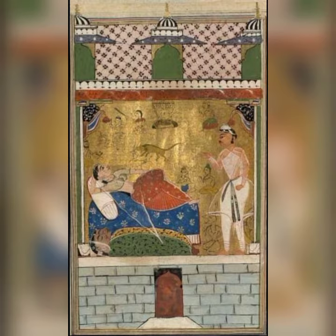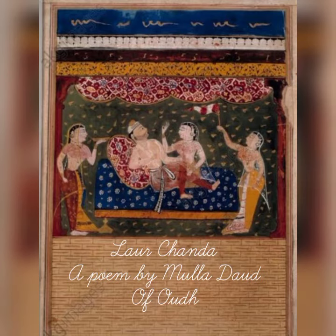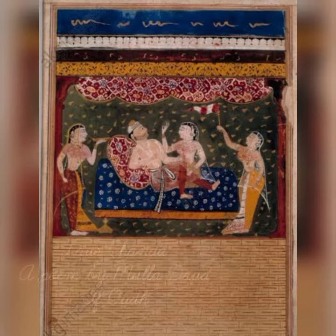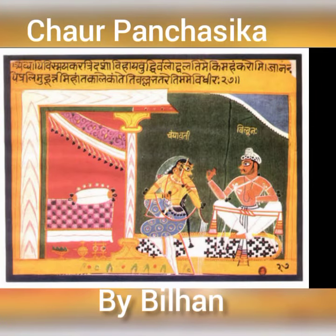Paintings became more secular and romantic themes were introduced. Laur Chanda, a poem composed by Mulla Daud of Odh, and Chaurapanchasika in Sanskrit — a love poem of 50 stanzas by Bilhana — were more in Rajasthani style than in Apabhramsha.